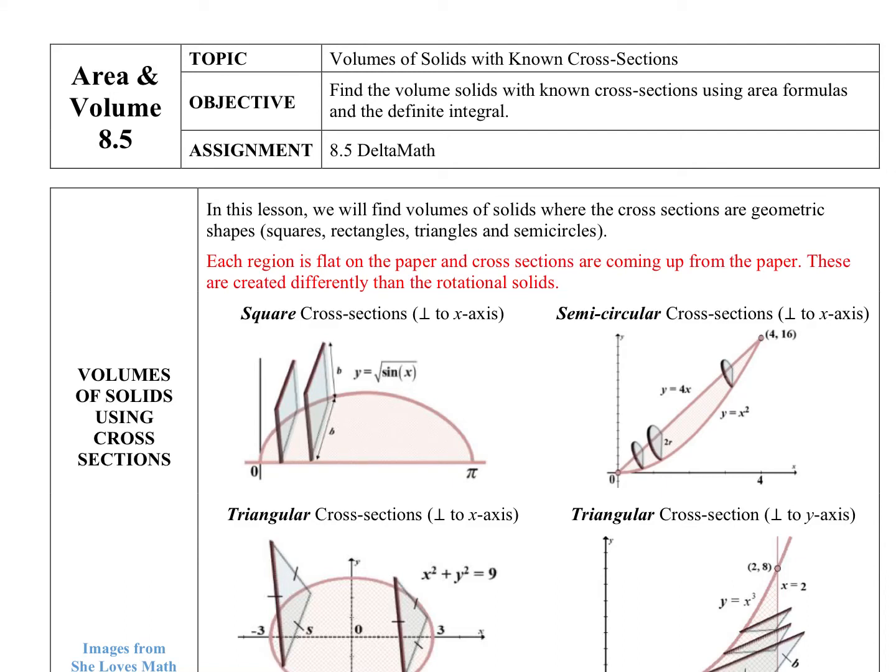Our next section, 8.5, is still about volume, but the way these solids are created is a little bit different than what we've talked about. Up until this point, our solids have been formed by rotating a region around an axis, either going horizontally or vertically. But this time, our solids are going to be created a little bit differently.